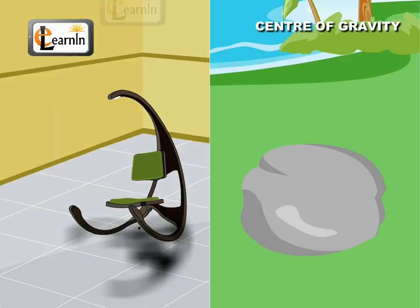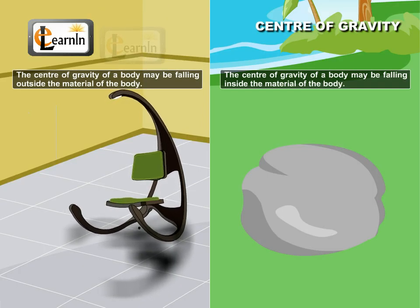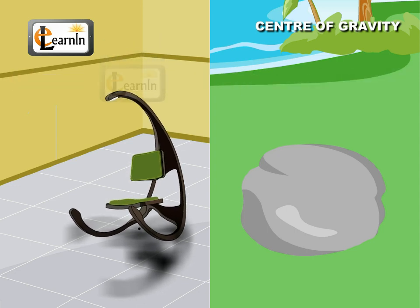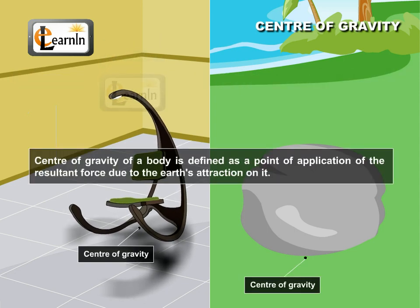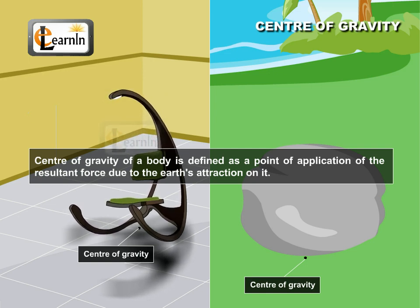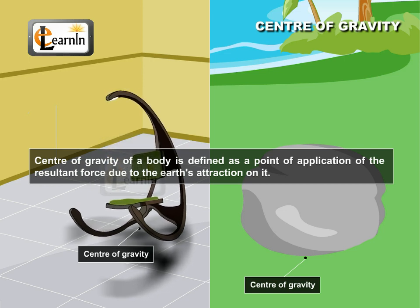The position of the center of gravity of a body may fall inside or outside the material of the body. The center of gravity of a body is defined as the point of application of the resultant force due to the earth's attraction on it.